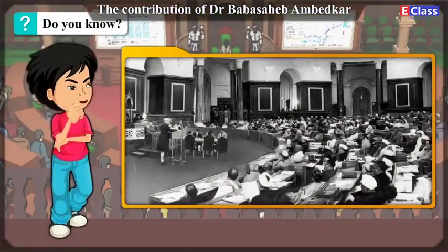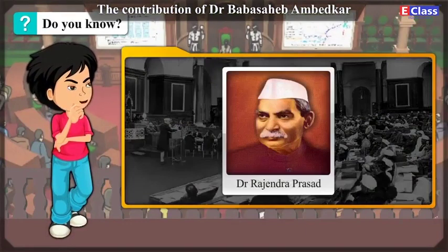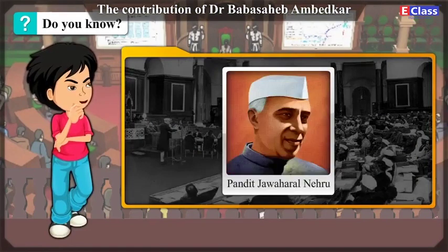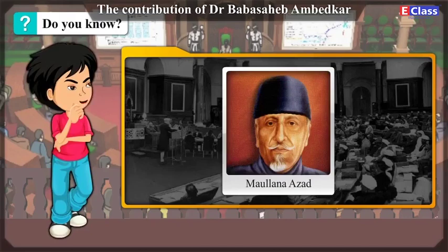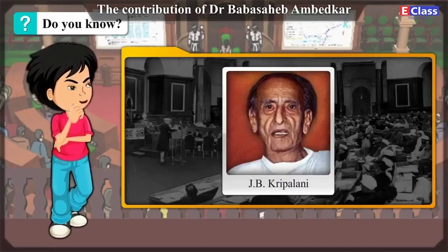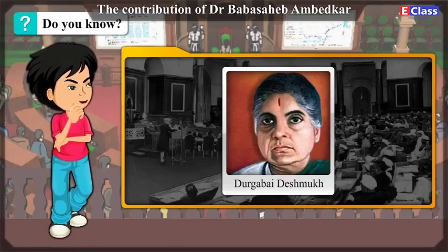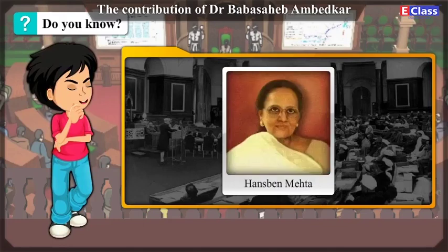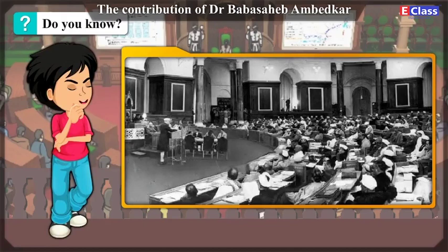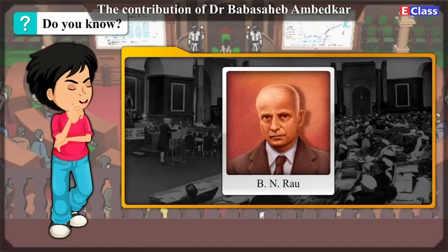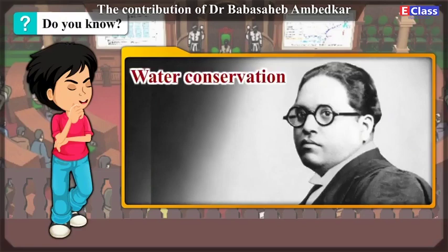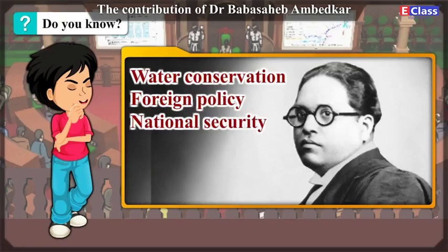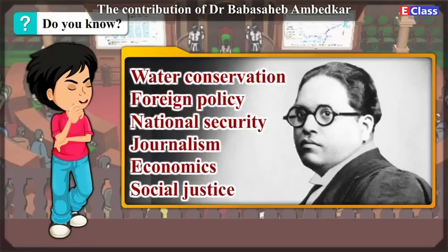Do you know? Some of the well-known members of the Constituent Assembly were noted figures. The noted legal expert, B. N. Rao, was appointed as a Constitutional Advisor on Legal Matters. Do you know? Dr. Baba Sahib Ambedkar's contribution was in a wide range of fields like water conservation, foreign policy, national security, journalism, economics, social justice, etc.